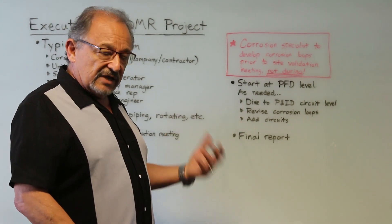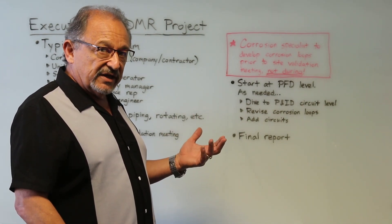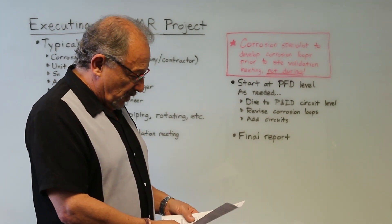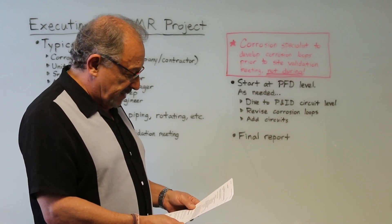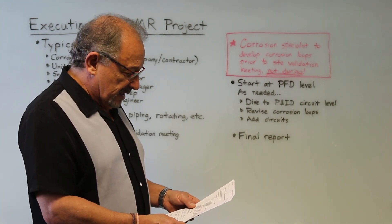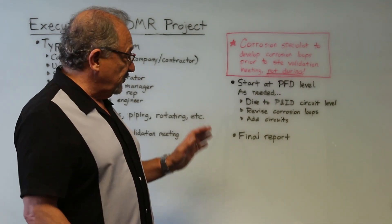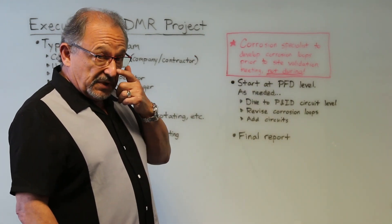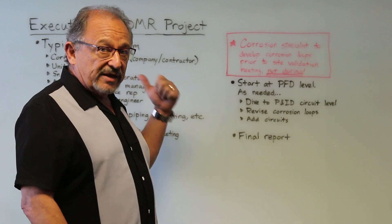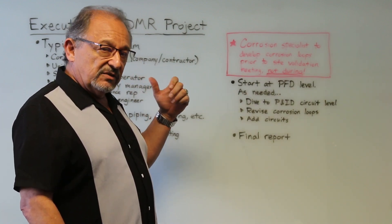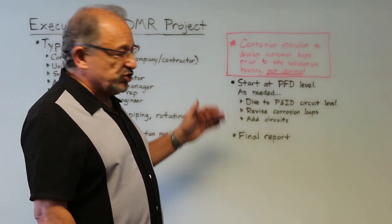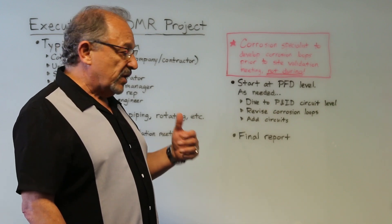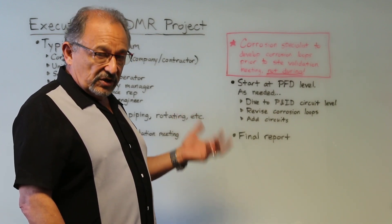Since we're doing this, let's leverage it and make the maximum advantage out of the effort to get the greatest value. In the final report, remember this relates not just to fixed equipment but should also relate to rotating equipment. Since we have the reliability engineer for the unit in that meeting, we can address those things. The report should also include, as desired, mitigation efforts — what is recommended to mitigate or address the damage.